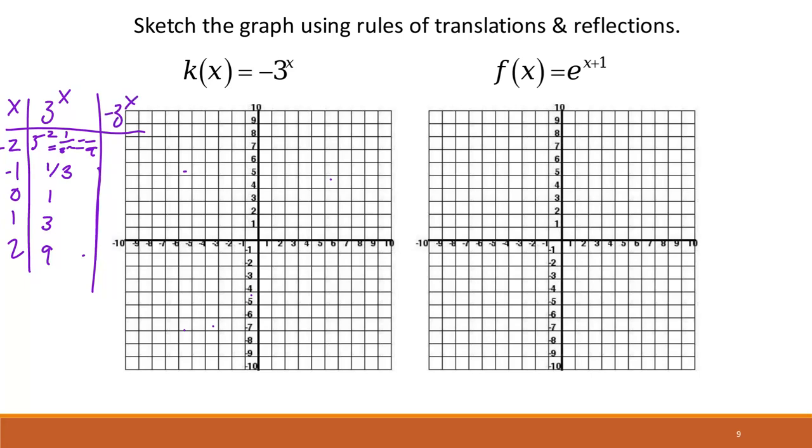Then this is now the point negative 1 ninth. This is point negative 1 third. This is point negative 1, negative 3, and negative 9. So we can go ahead and draw that as well.